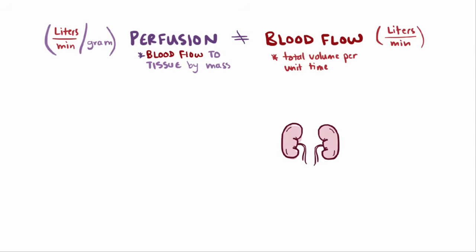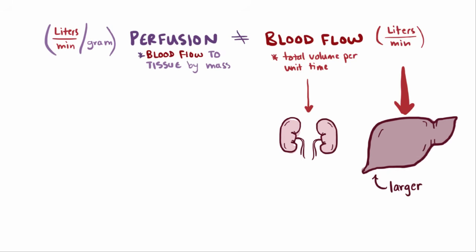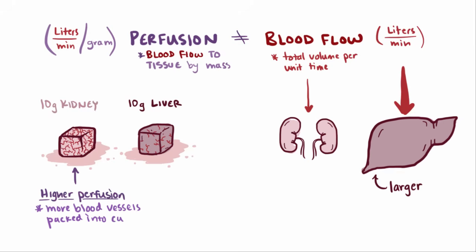As an example, if you compare the total blood flow to the kidneys with the total blood flow to the liver, it'd be higher to the liver because the liver is larger. But if you took a 10-gram cube of liver tissue and compared it to a 10-gram cube of kidney tissue, the kidney actually has higher perfusion since it has more blood vessels packed into its cube.